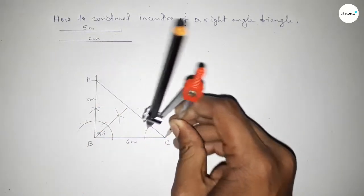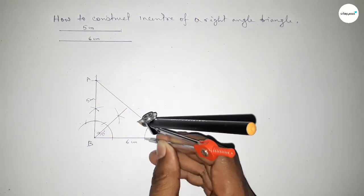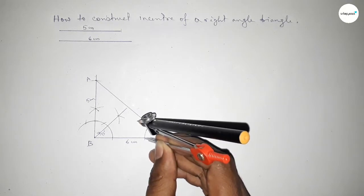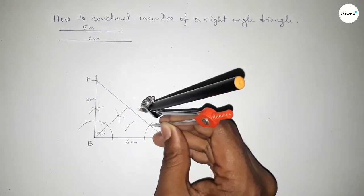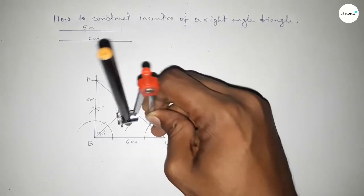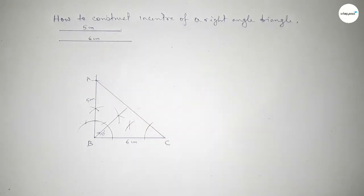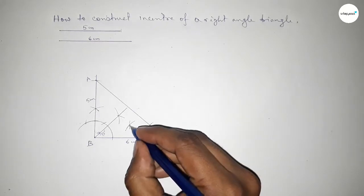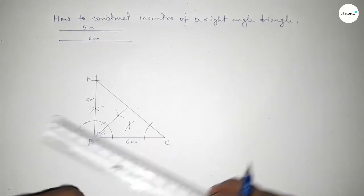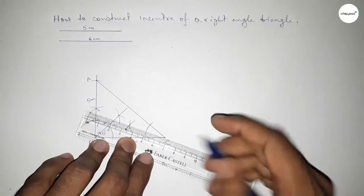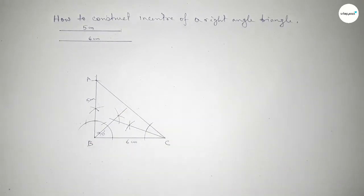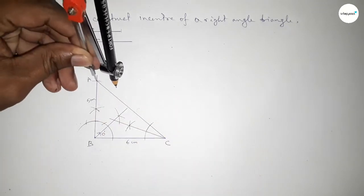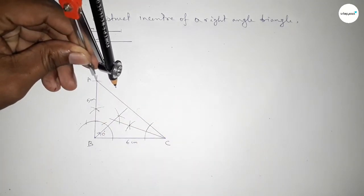Now bisecting angle C. Putting the compass here, taking any length and drawing an arc, then putting the compass here and drawing another arc and cutting here. Both curves intersect at a point. Now joining this bisector.